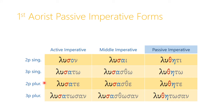Looking at all the aorist imperative forms together: if you can remember the aorist active imperatives and especially the second person singular forms, the rest follows easily. In the middle, the tau becomes sigma-theta. In the aorist passive, we revert to the same endings as in the active — that's the key pattern to keep in mind.